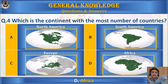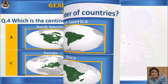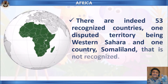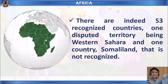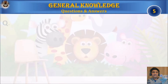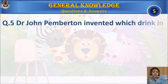Now let's learn some facts about Africa. There are indeed 53 recognized countries, one disputed territory being Western Sahara, and one country, Somaliland, that is not recognized. 53 countries!